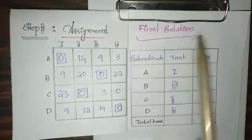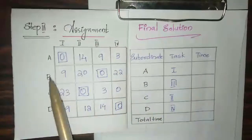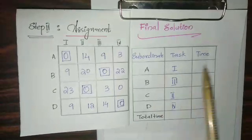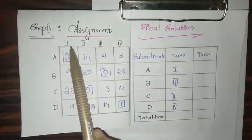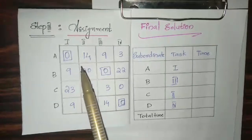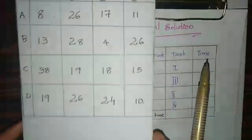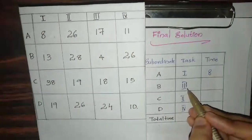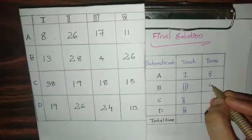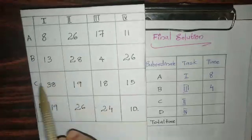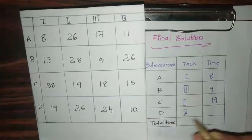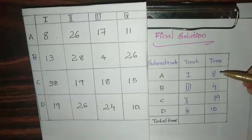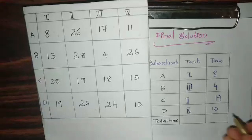Our final solution: Worker A chooses Job 1, Worker B chooses Job 3, Worker C chooses Job 2, Worker D chooses Job 4. Referring back to the original table for the actual times: Worker A does Job 1 — time is 8. Worker B does Job 3 — time is 4. Worker C does Job 2 — time is 19. Worker D does Job 4 — time is 10. Total time = 8 + 4 + 19 + 10 = 41.